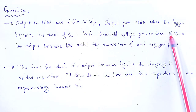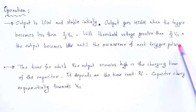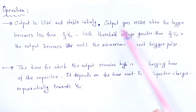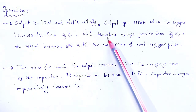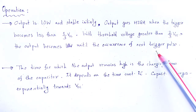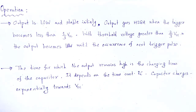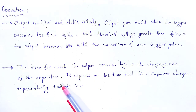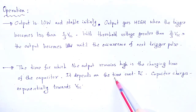With the threshold voltage greater than two-thirds of Vcc, the output becomes again low until the occurrence of the next trigger pulse. First, output is low; then it goes high when we apply the trigger that is less than that particular potential. Again, when threshold voltage is greater than two-thirds Vcc, it becomes low until we apply the next trigger pulse. Therefore, the time for which the output remains high is the charging time of the capacitor, which depends upon the time constant RC.